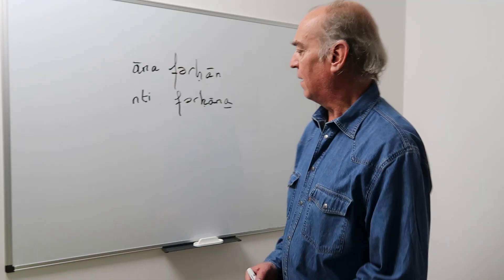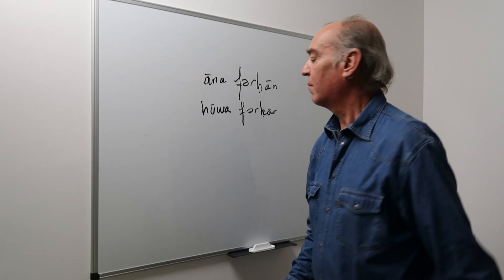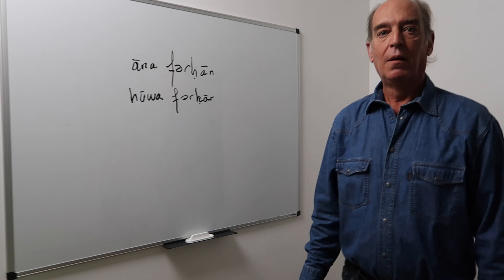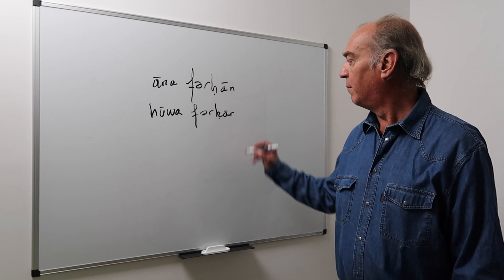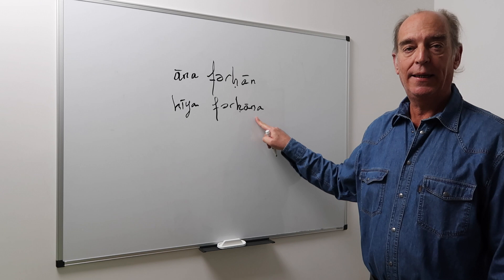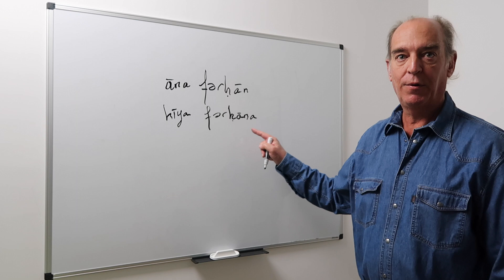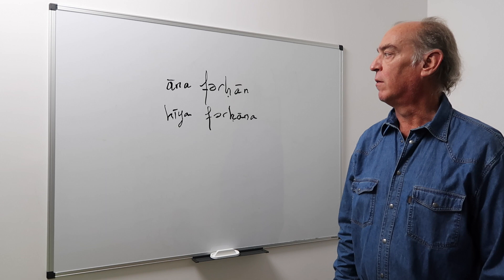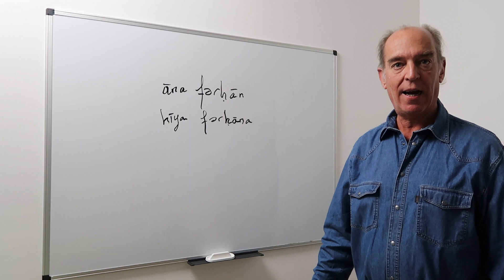In third person, Huwa ferhaan. Then Hiya — pay attention — ferhaana. Hiya ferhaana. Now Hiya is a woman, so I have to use the feminine form of the adjective ferhaan. So: Anna ferhaan, Nti ferhaana, Huwa ferhaan, Hiya ferhaana. It's not that complicated, as you see.